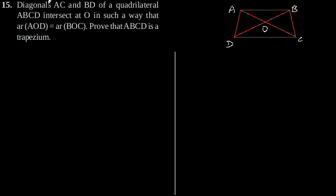Exercise 9.3 question 15: Diagonals AC and BD of a quadrilateral ABCD intersect at O in such a way that area of AOD is equal to area of BOC. Prove that ABCD is a trapezium. Suppose this is our quadrilateral ABCD.